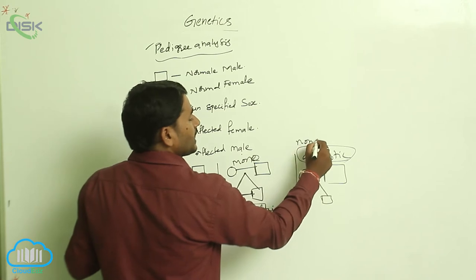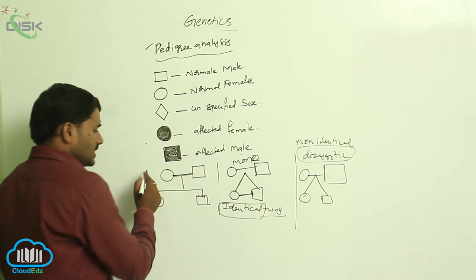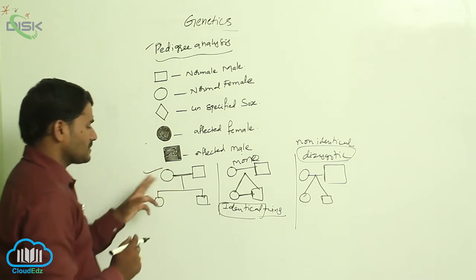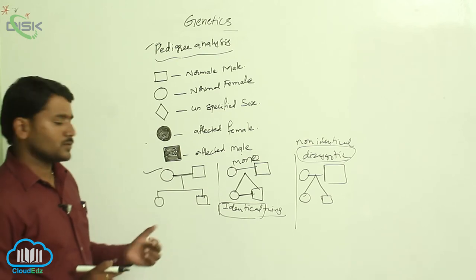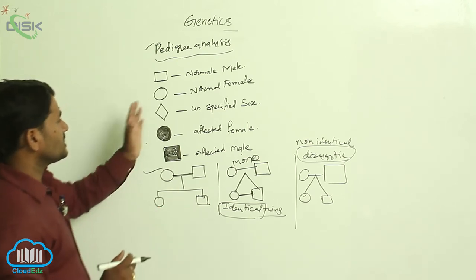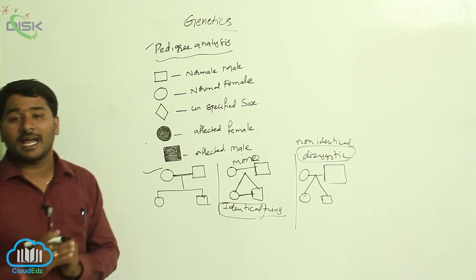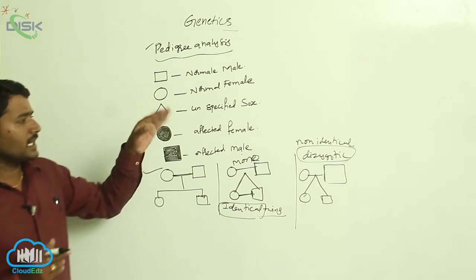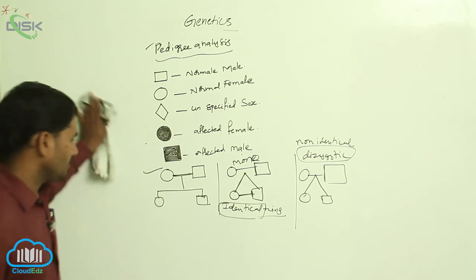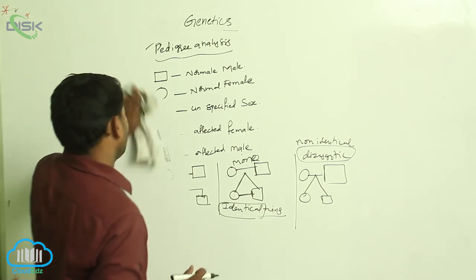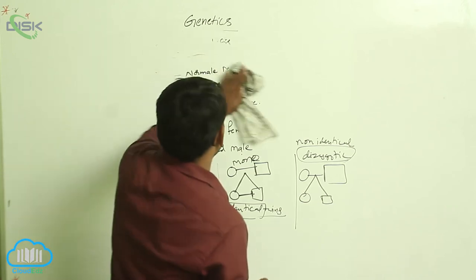This is a normal cross between two individuals, male and female, showing one daughter and one son. So these are the symbols which indicate different types of individuals in a family tree. This is pedigree analysis.